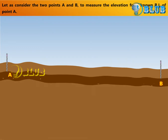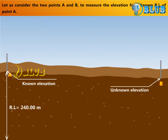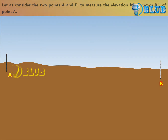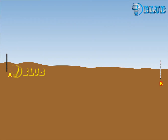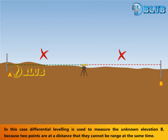Let us consider two points A and B to measure the elevation from the known reduced level of point A. In this case, differential leveling is used to measure the unknown elevation of point B, because the two points are at a distance that they cannot be ranged at the same time.